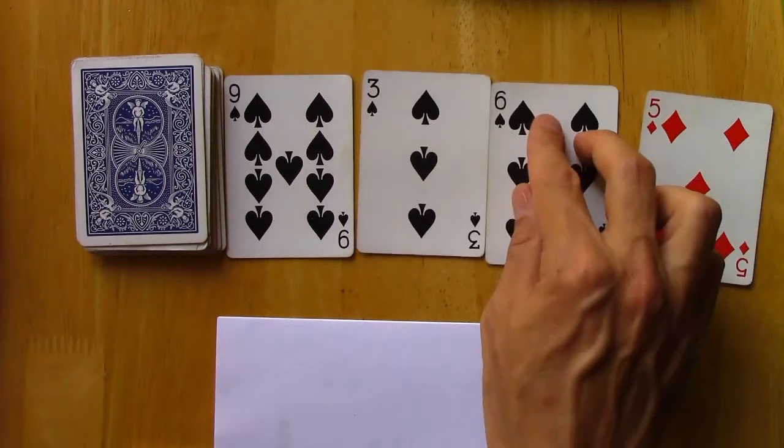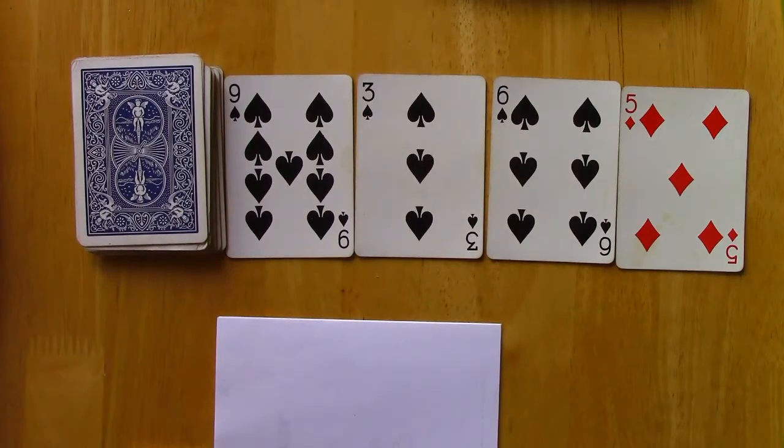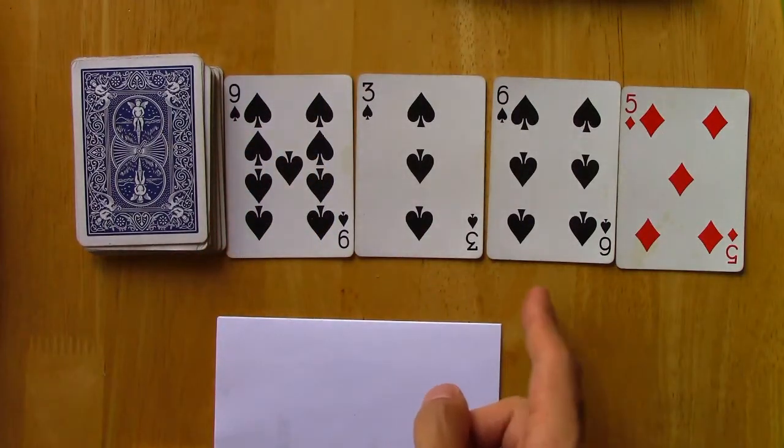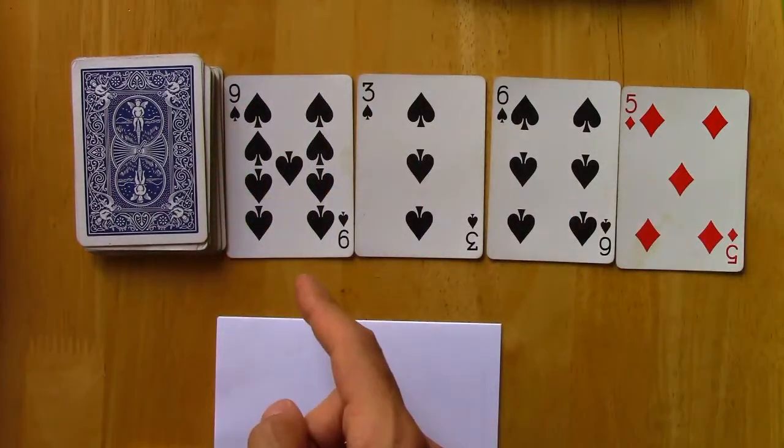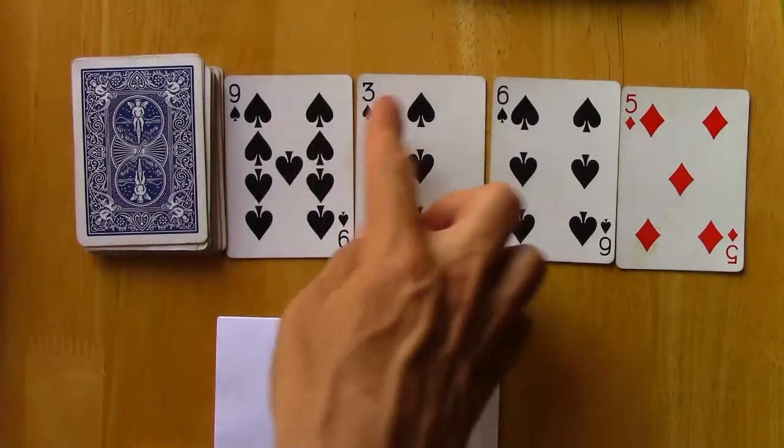So this is the sample. Then the empirical distribution treats the sample essentially as a population. So what I mean by that, in this case there are four cards.